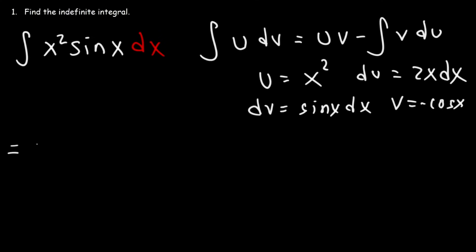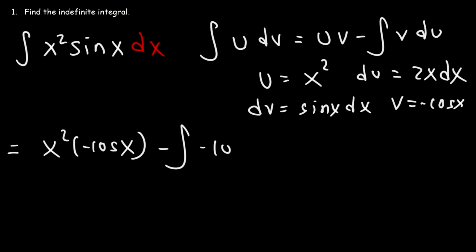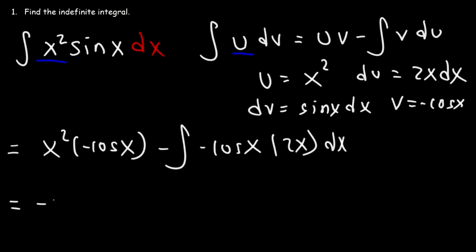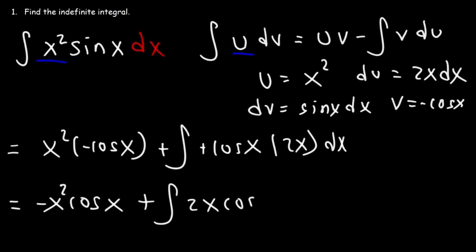Applying the formula, we get x squared times negative cosine x, minus the integral of v du, which is negative cosine x times 2x dx. Here, the u part is x squared and dv is sine x dx. This gives us uv minus the integral of v du, which simplifies to negative x squared cosine x plus the integral of 2x cosine x dx.